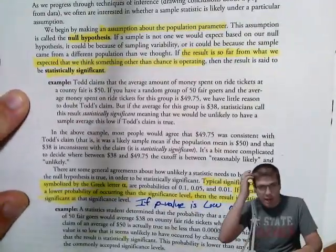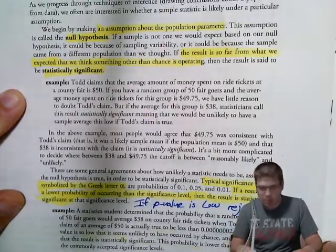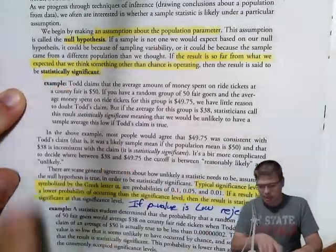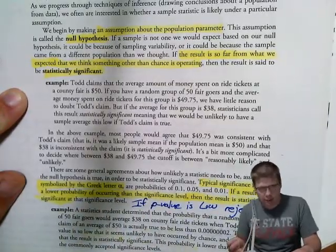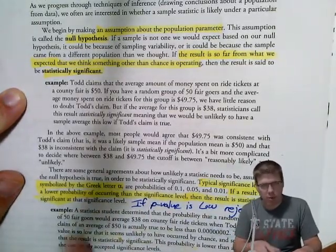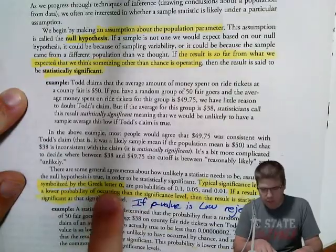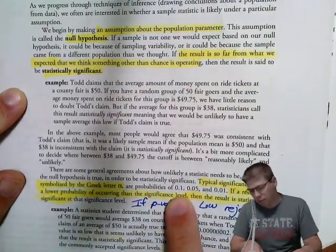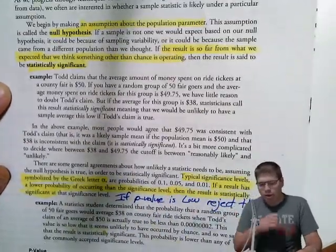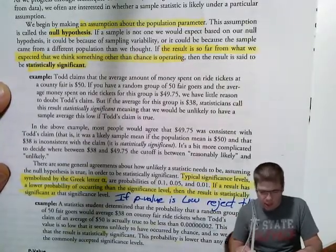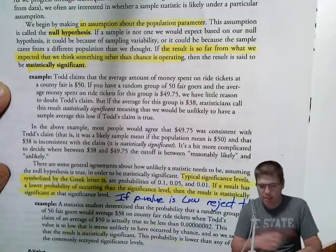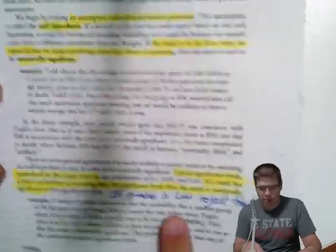When we sample or do experimental design with randomization, it could just be a little bit different by chance. But if it's far enough away that we think that doesn't just happen by chance, that's when we call it statistically significant. We find that probability that ultimately is the p-value.